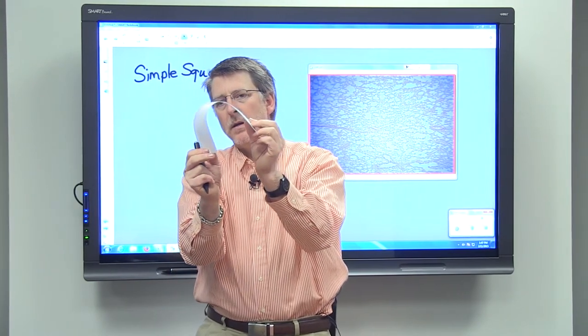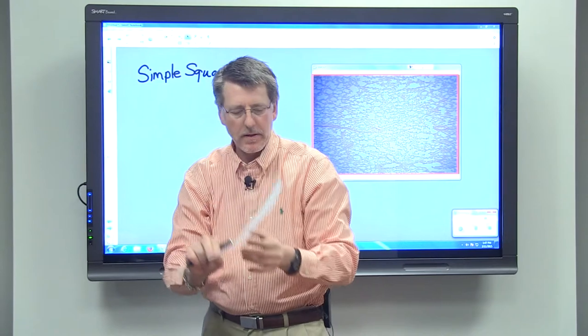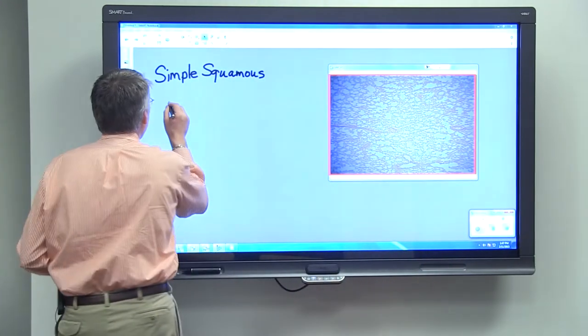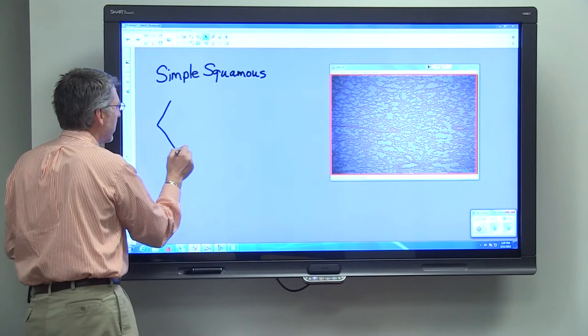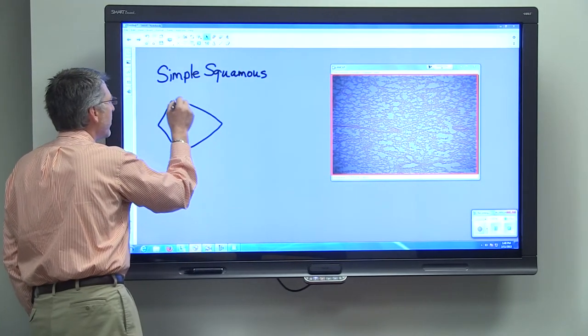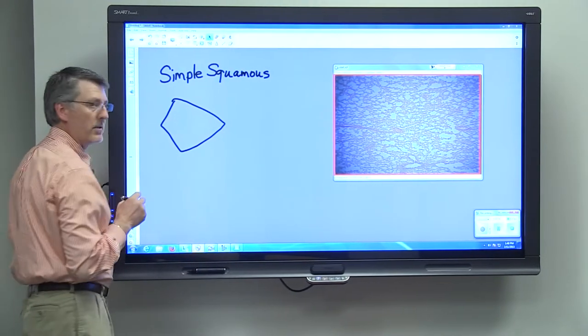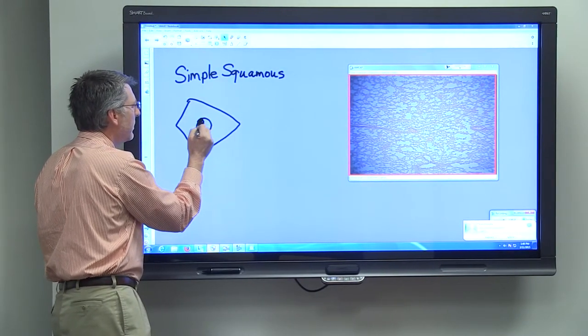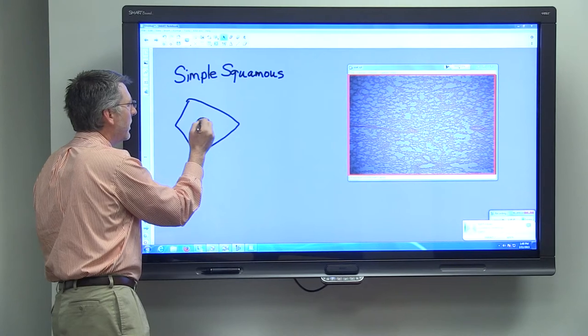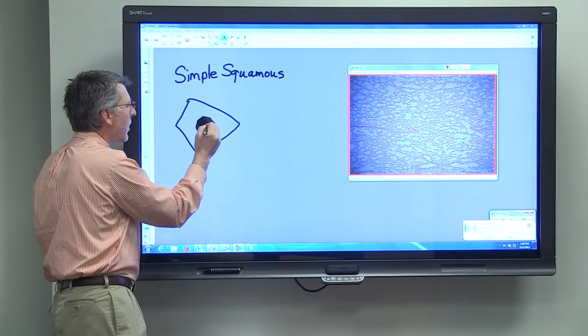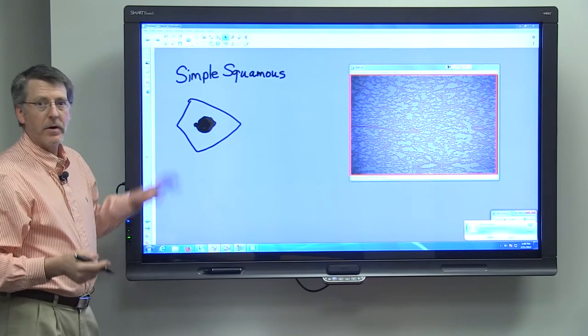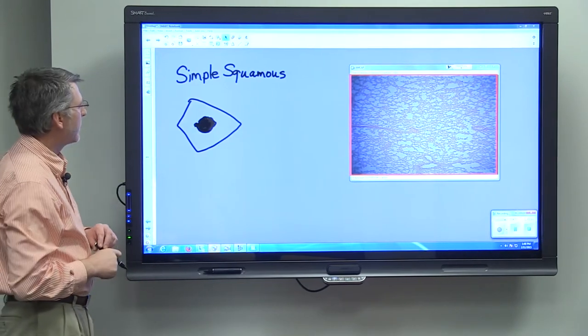Well, that's the way to think about simple squamous epithelial cells. If we wanted to draw a simple squamous epithelial cell, we would just draw something that approximates the shape of a square and we would draw a circle in there. Maybe make it a little more oval shaped for the nucleus. So we've just drawn a simple squamous epithelial cell.